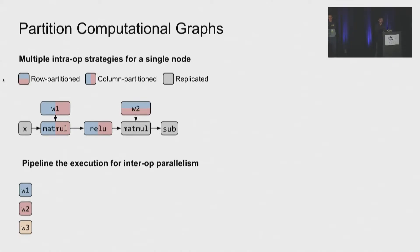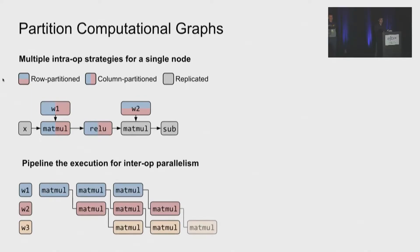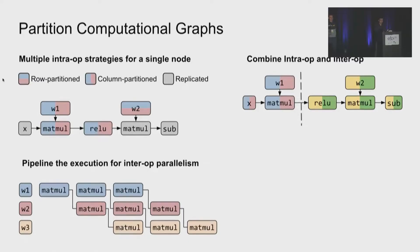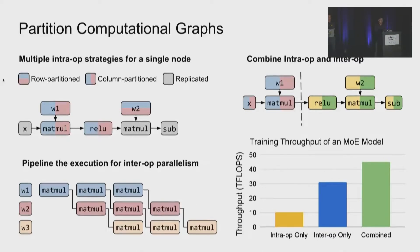And for inter-operator parallelism, we can increase device utilization by pipelining the computation of multiple input batches as shown in this figure. We can put three layers on three devices. Then we can keep all devices busy by letting them work on different input batches. The intra-operator parallelism and inter-operator parallelism can also be combined as shown in this figure. We can cut the graph into two parts for inter-operator parallelism. Then for each subgraph, we can also do intra-operator parallelism inside the subgraph. For an MOE model, we can get the best performance only when we combine these two kinds of parallelism. So in summary, all these choices form a sophisticated search space with many trade-offs. So it's very hard to efficiently search for a good strategy in this space.